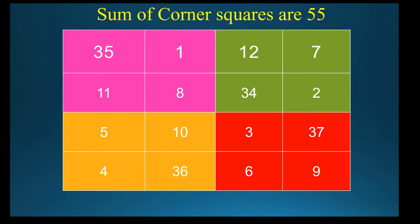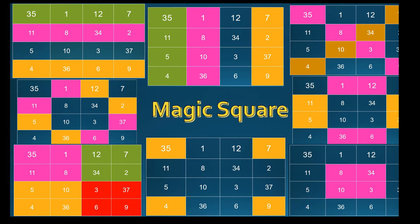And take red color box: 37, 9, 6, 3. Total is 55. So you can take in the form of row, column, diagonal, or identical colors, or corner squares, corner numbers, or middle square. You can take any type. You will get the total number is same. This is the magic square.